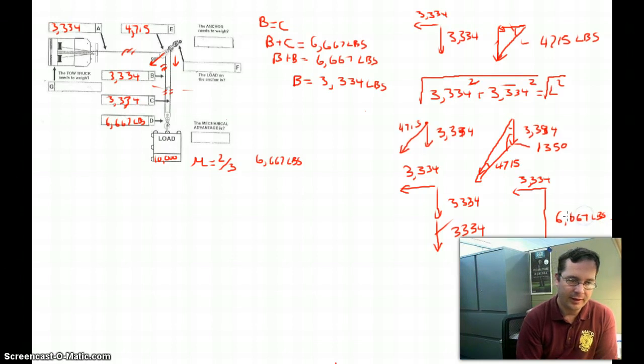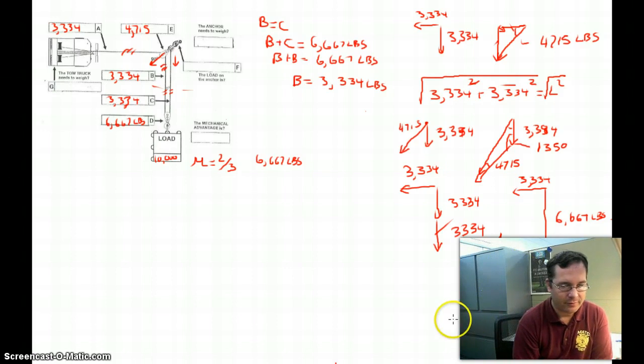That basically could be redrawn one more iteration simpler. 3,334 to the left, 6,667 pounds down. Now the process is exactly the same. We slide these head to tail. And the resultant is the hypotenuse of this triangle. So you get 3,334 squared plus 6,667 squared equals the length of that hypotenuse squared.